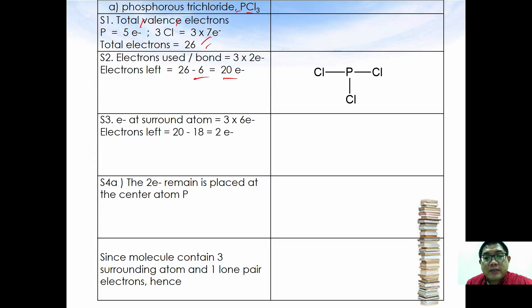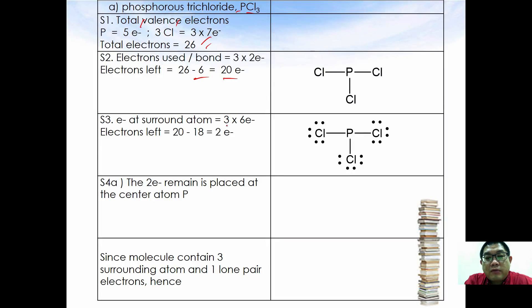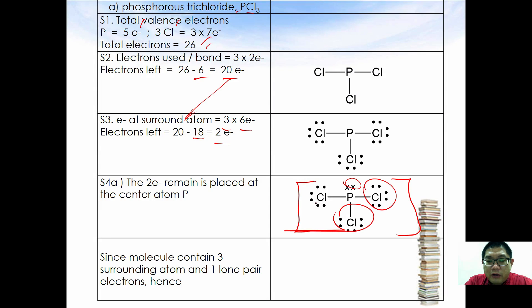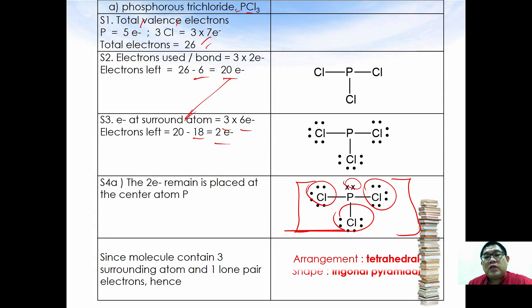In step 3, place 6 electrons around each of the 3 chlorine atoms: 3×6 = 18 electrons. From the remaining 20, subtract 18, leaving 2 electrons. Since there are extra electrons, place them at the center phosphorus atom. The Lewis structure of PCl3 shows 1 lone pair and 3 bond pairs. The molecular arrangement is similar to tetrahedral, but the shape is a trigonal pyramid.